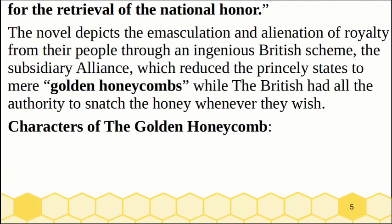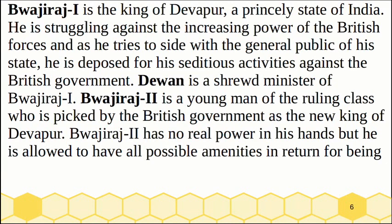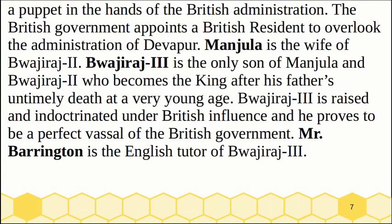Bajirao I is the King of Devpur, a princely state of India. He is struggling against the increasing power of the British forces. As he tries to side with the general public of his state, he is deposed for his sadist activities against the British government. Diwan is a shrewd minister of Bajirao I. Bajirao II is a young man of the ruling class who is picked by the British government as the new king of Devpur. Bajirao II has no real power in his hands, but he is allowed to have all possible amenities in return for being a puppet in the hands of the British administration. The British government appoints a British resident to overlook the administration of Devpur.